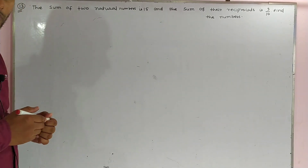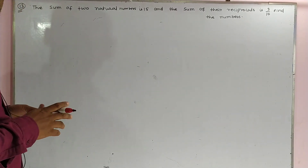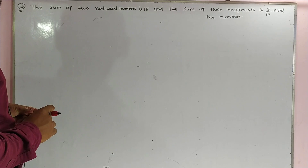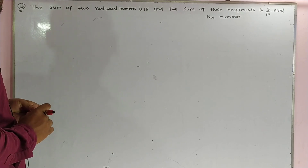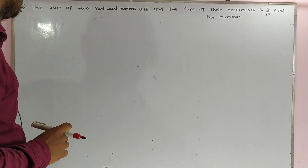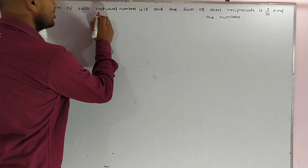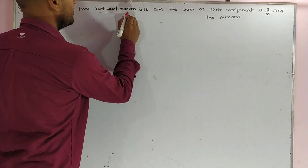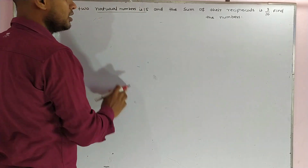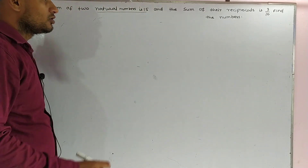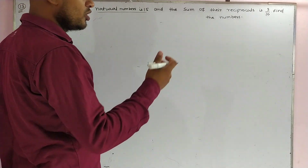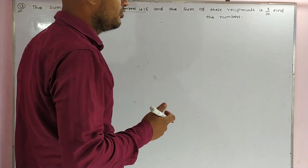Good morning students. Today we have to discuss question number 13. The sum of two natural numbers is 15 and the sum of their reciprocals is 3 upon 10. We need to find the numbers.